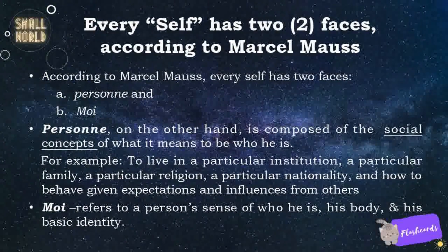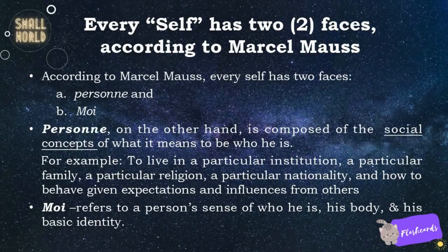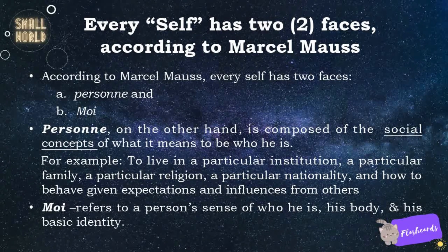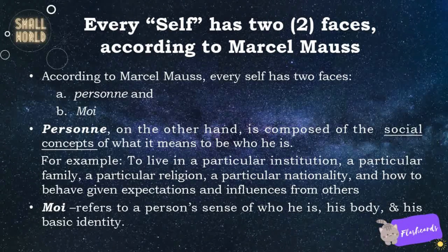Every self has two faces, according to Marcel Mauss. Person and Moi. 'Person' is composed of the social concepts of what it means to be who one is — for example, to live in a particular institution, a particular family, a particular religion, a particular nationality, and how to behave given expectations and influences from others. 'Moi' refers to a person's sense of who he is, his body, and his basic identity.